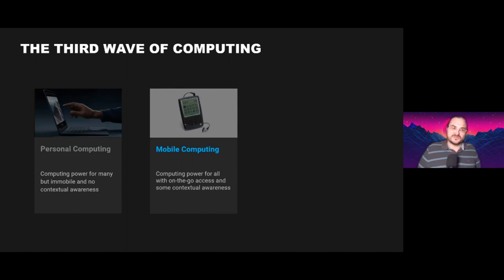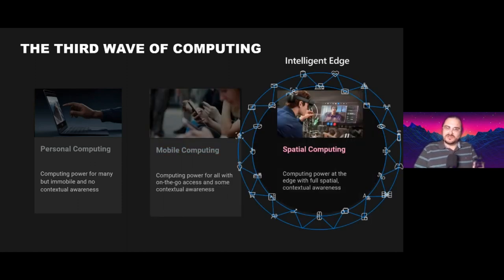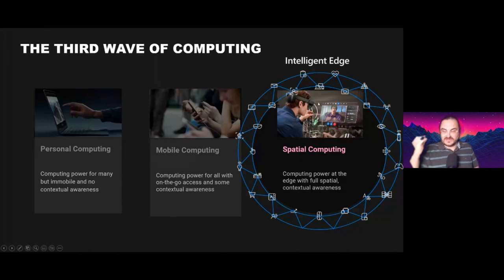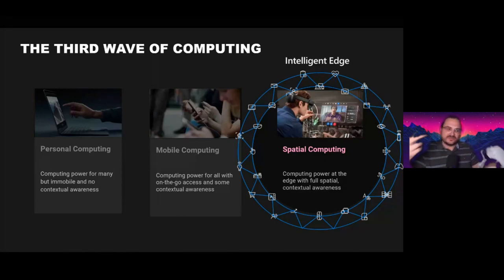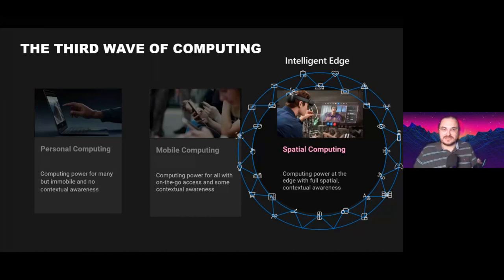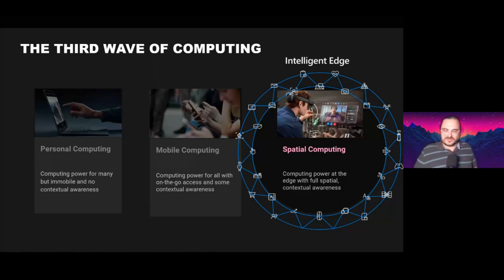Now we're entering the spatial computing age, mainly driven by AI, computer vision, and intelligent edge devices with built-in intelligence. That includes the Microsoft HoloLens with all its front-facing sensors, virtual reality headsets like the Quest with cameras that spatially track the environment, and even mobile phones — some with depth cameras — which can use AI computer vision to sense the world. All of these are spatial computing devices, regardless of form factor.